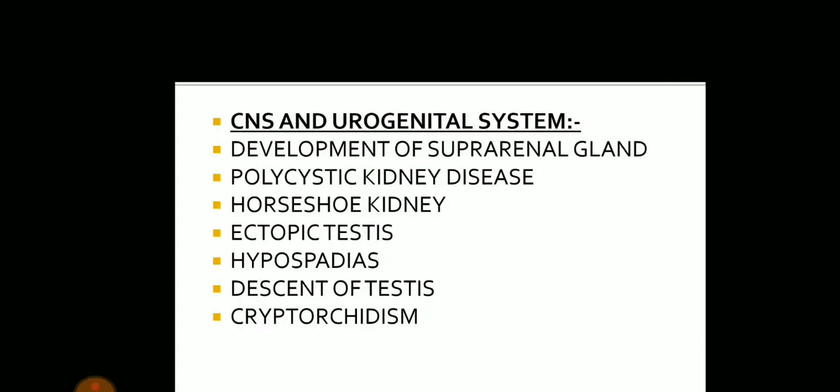Coming on to the CNS and the urogenital system, questions can be asked on development of the suprarenal gland, which is not at all important. Polycystic kidney disease and horseshoe kidney are also not important. Ectopic testis is very important. Hypospadias, descent of testis, and cryptorchidism are important.